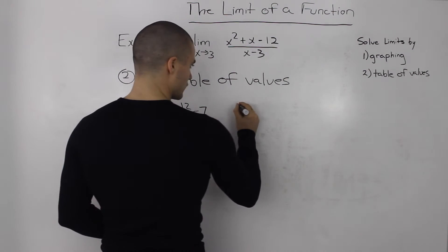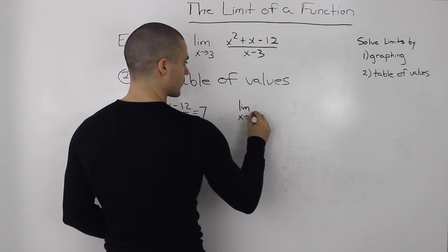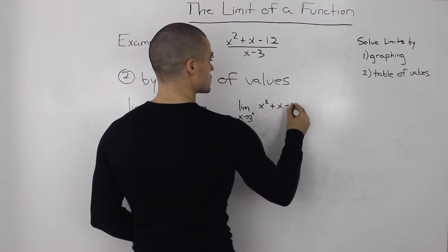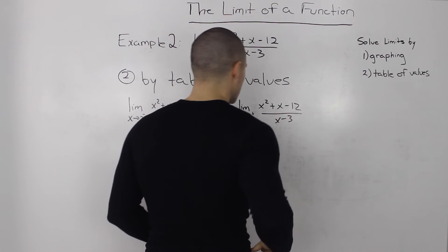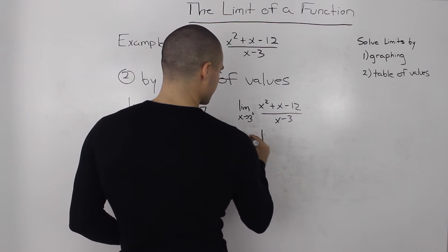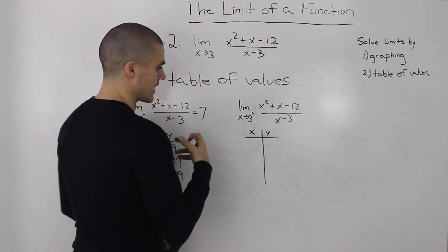Now let's do it from the right side. The limit as x approaches 3 from the right side of our function, (x² + x - 12)/(x - 3). If we make a table of values for this, we're going to approach 3 from the right side.